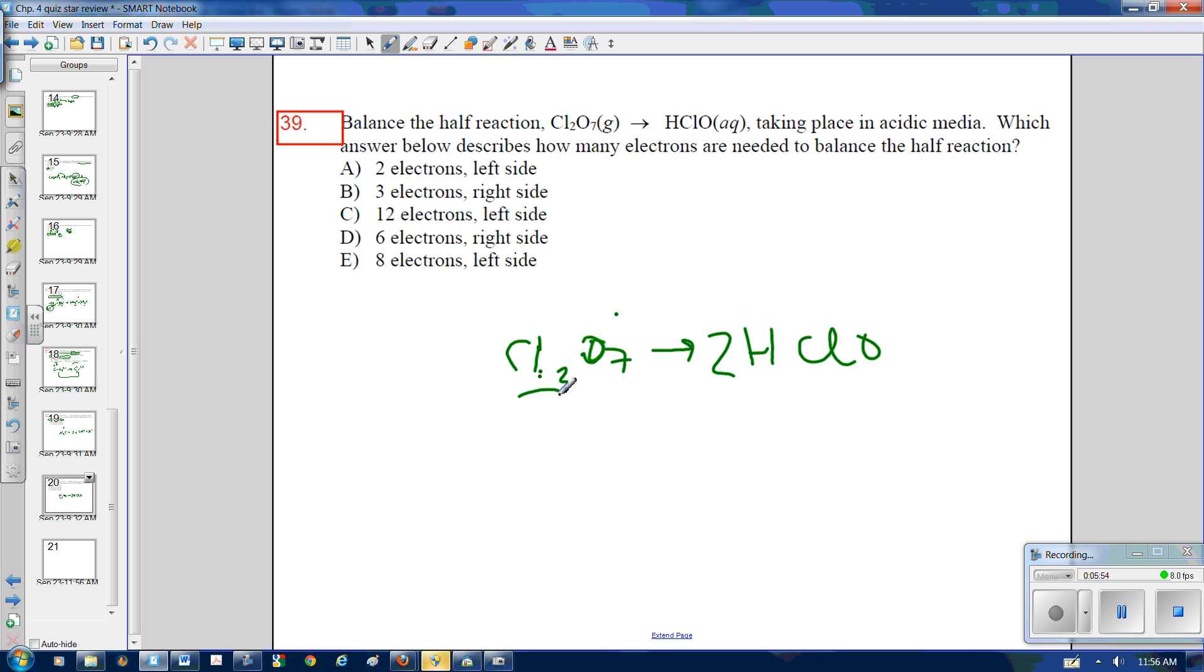Then I have to balance H's. I have 10 there, 5 times 2. 2 there is 12. So I add 12 H pluses on the left-hand side. Next thing I need to do is balance charge. When I go to balance charge, this side has a charge of zero. This side has a charge of plus 12. So I must add 12 electrons on the left-hand side to bring this charge down to zero.